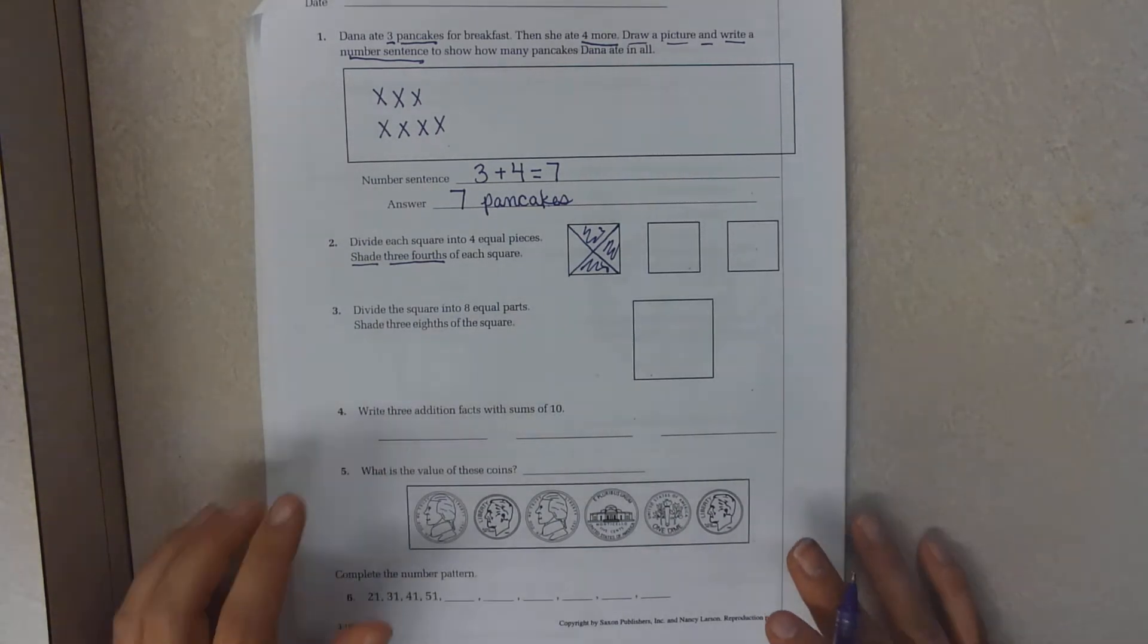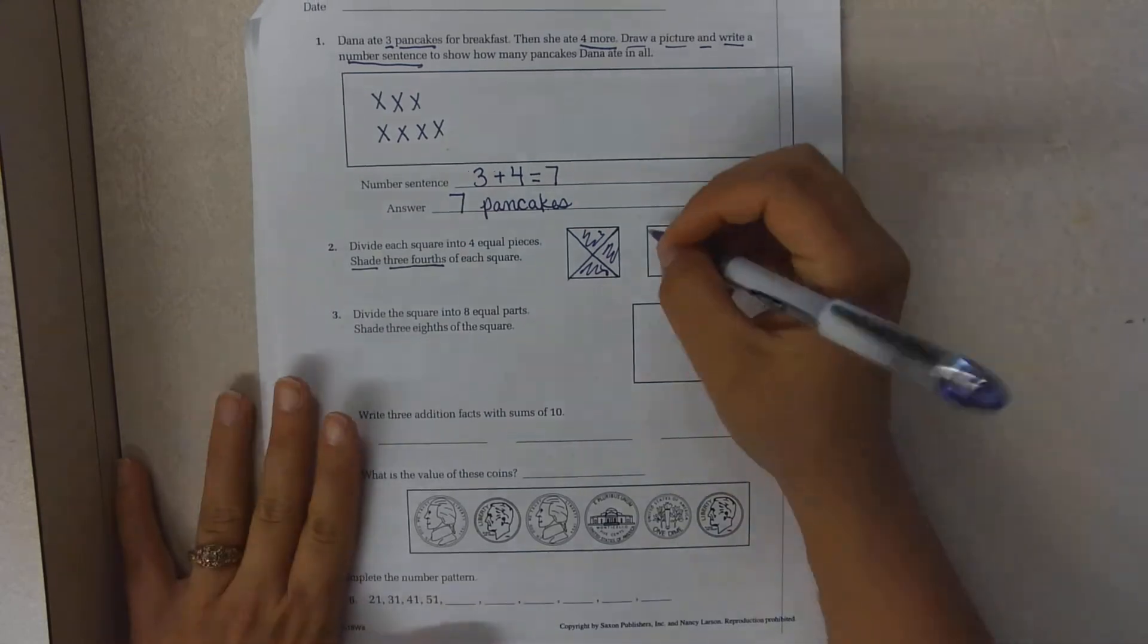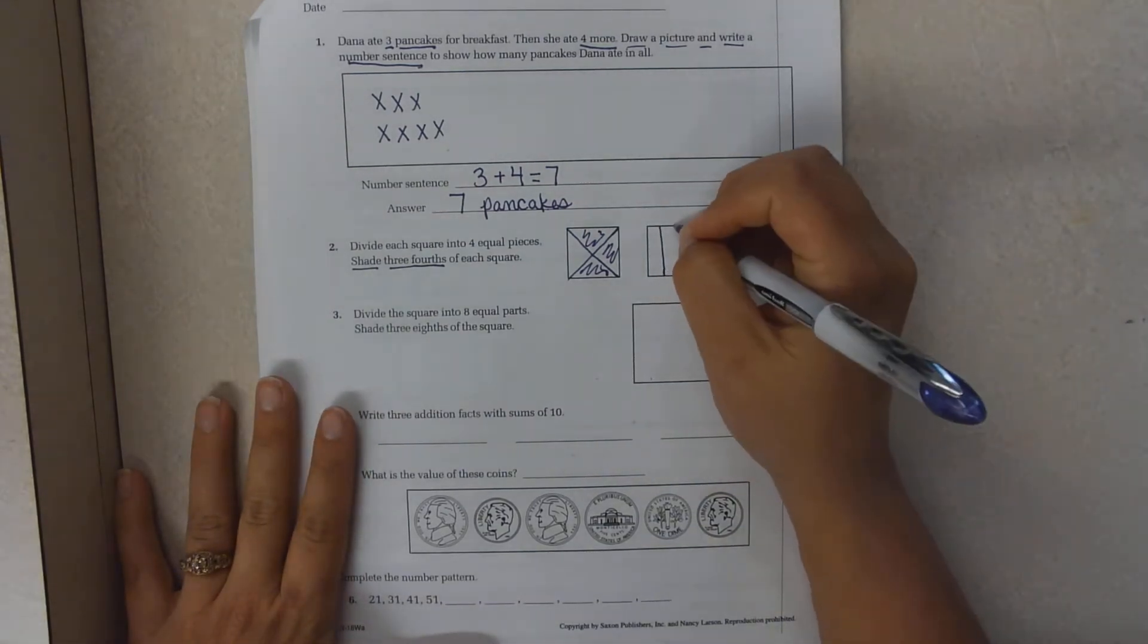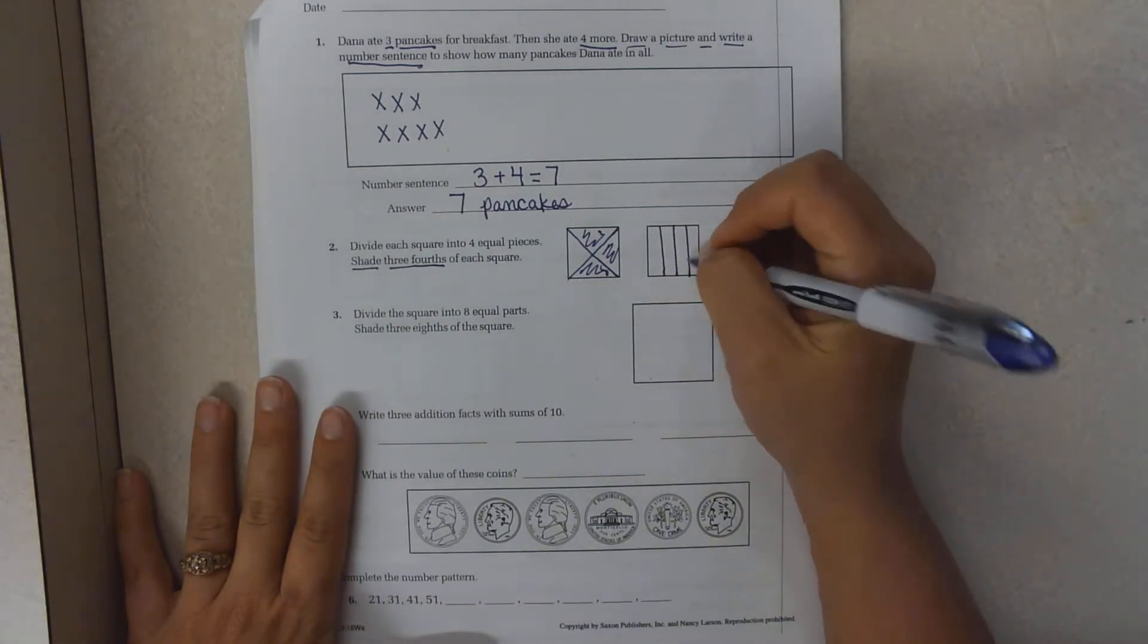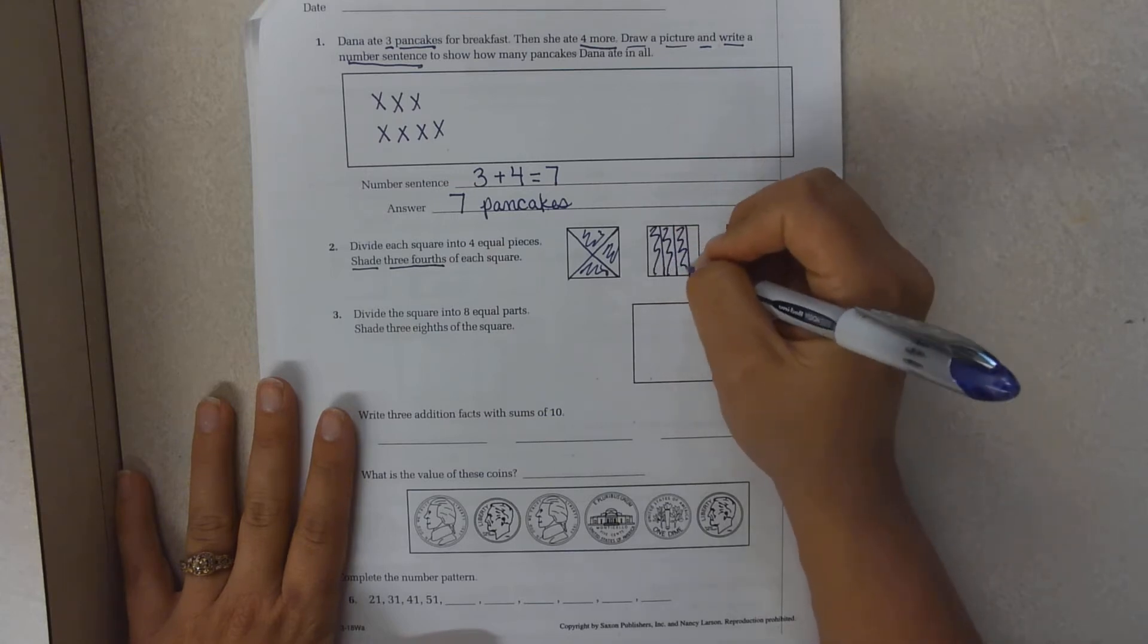And please don't color it in solid. If you color them in solidly, I can't figure out where your lines are at. So one fourths, two fourths, three fourths.